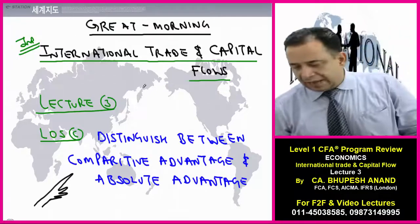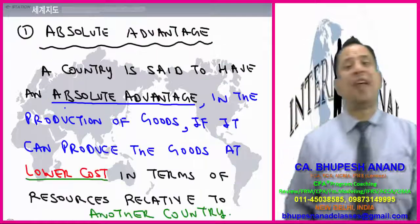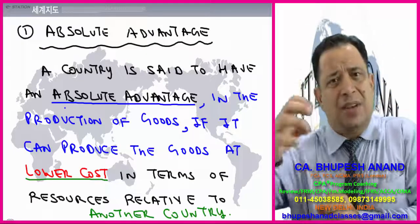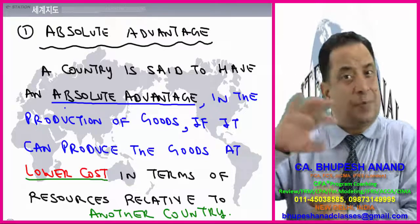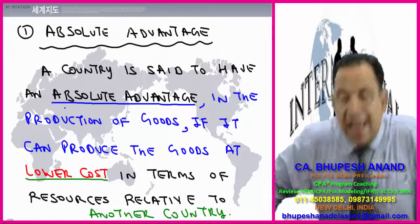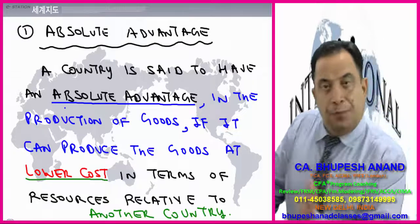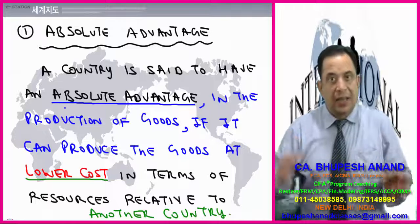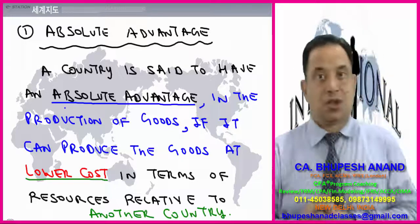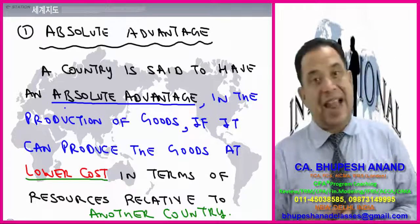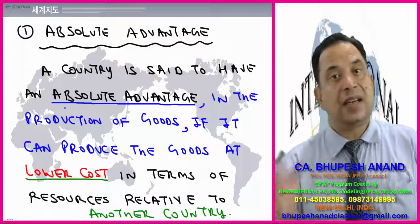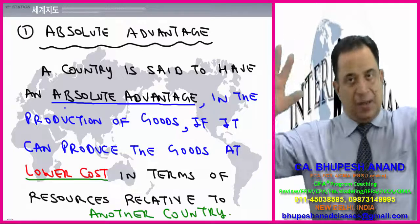The first point I am going to start with is: what is the meaning of absolute advantage? When I say absolute advantage, it is prima facie — I can see which country has the absolute advantage over which product. Please write down: a country is said to have an absolute advantage in the production of goods if it can produce goods at a lower cost in terms of resources relative to another country. I will explain it; no need to worry.